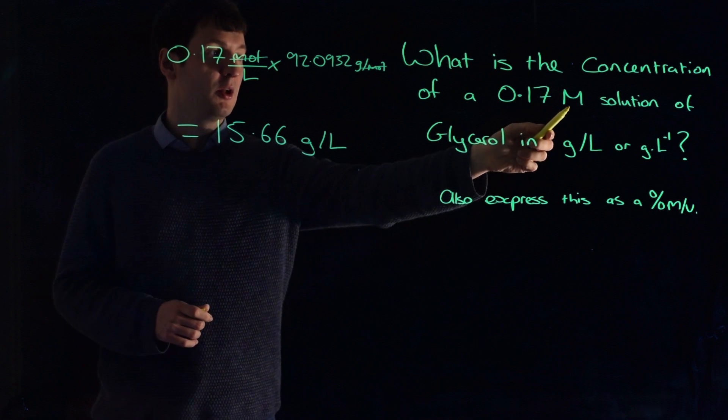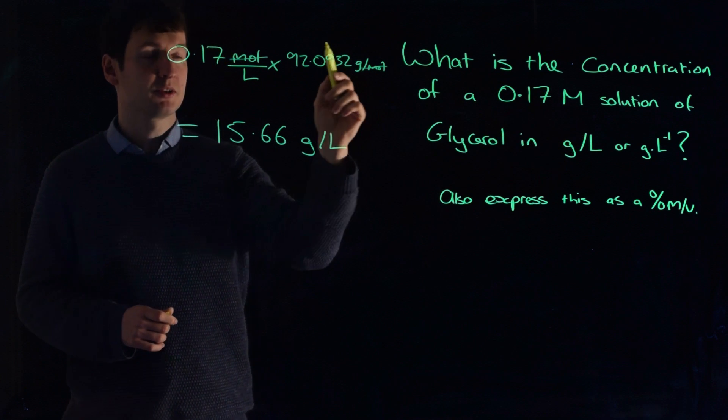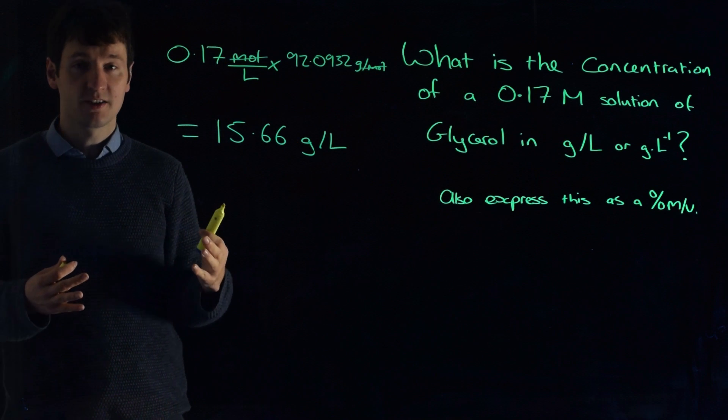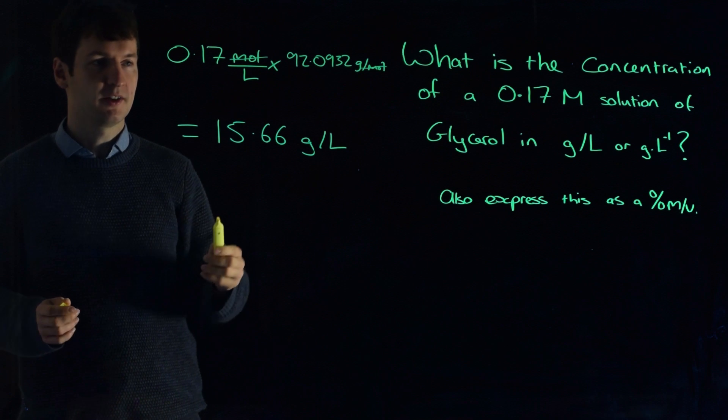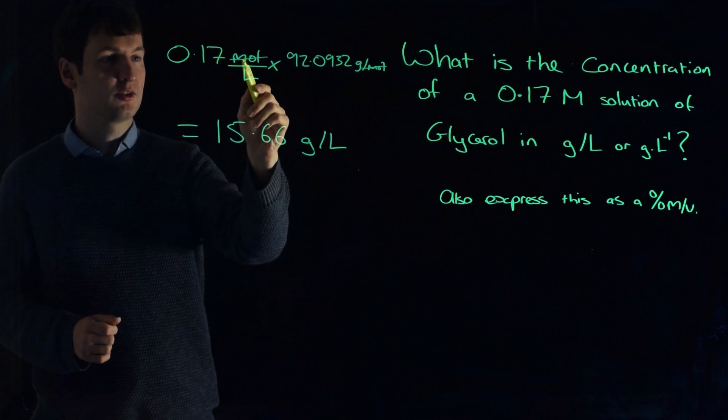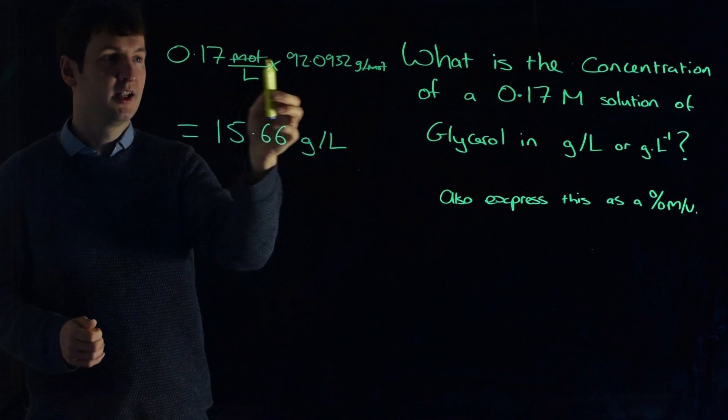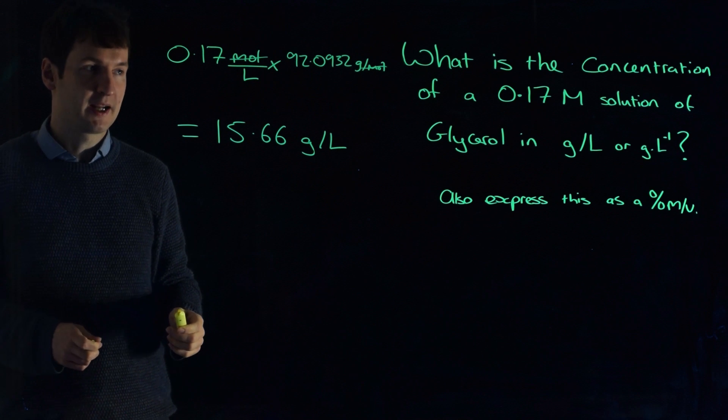So all you have to do to go from moles per liter to grams per liter is multiply by the molar mass. If you're not convinced of that, or if you forget whether it's multiply or divide, just check the units. If the units do what they're supposed to do, then chances are you're going down the right path.